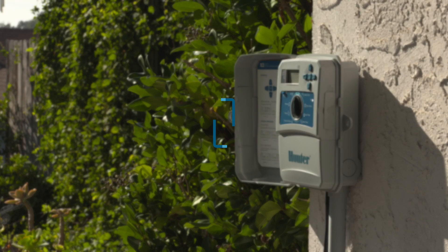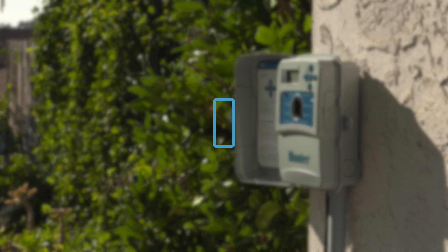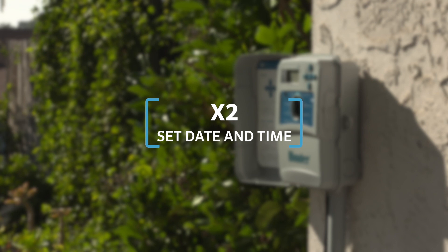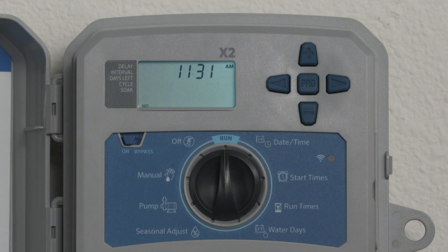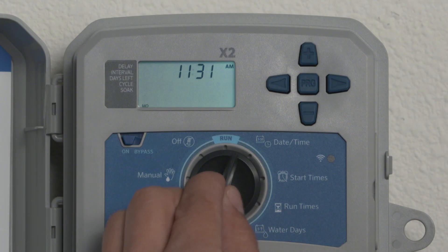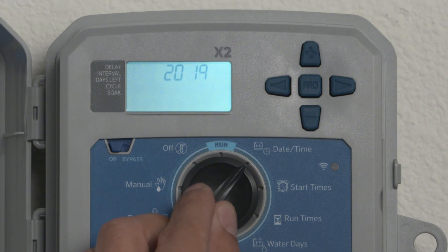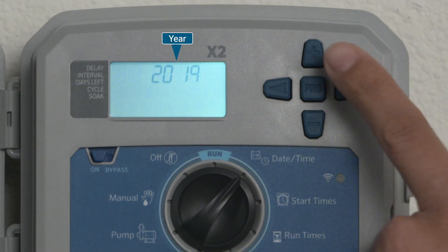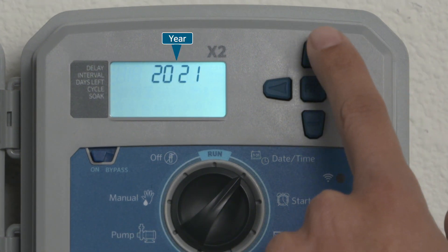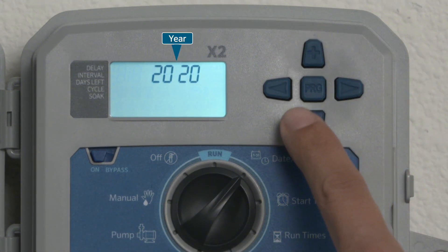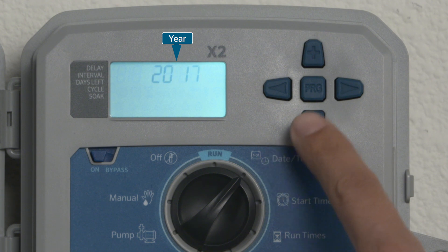The first step in programming any controller is to set the current date and time. To do this, turn the dial to the date/time position. The year will be flashing, meaning that it is ready to be changed using the plus or minus buttons.